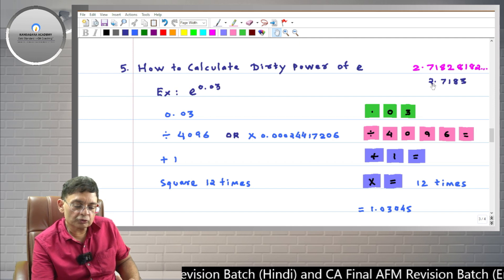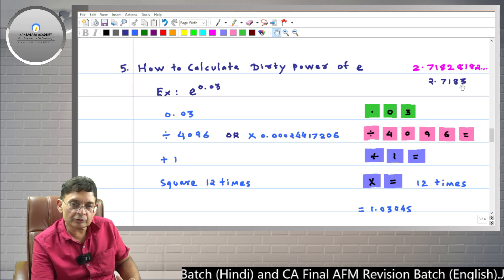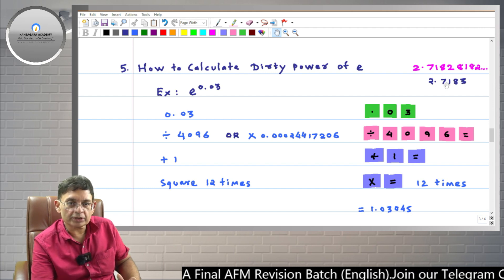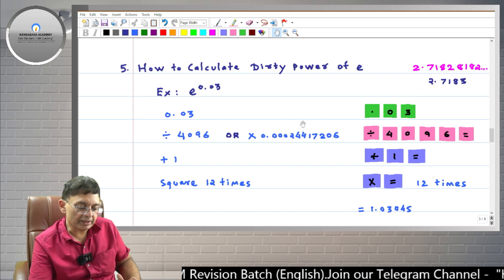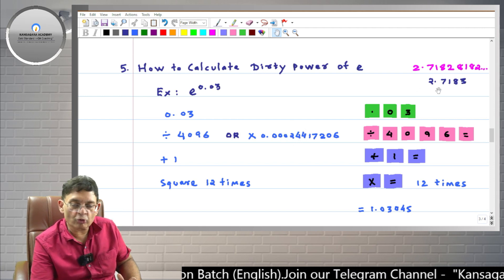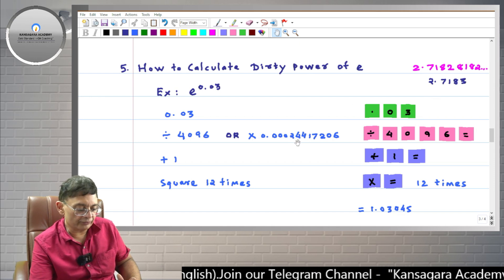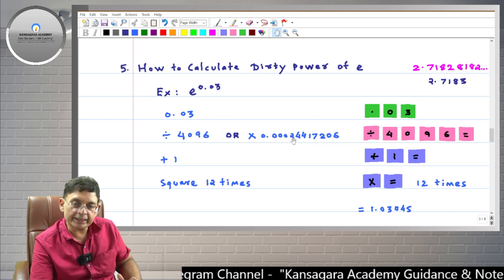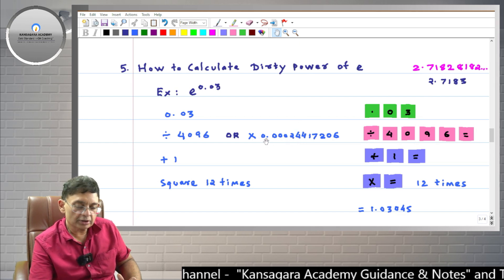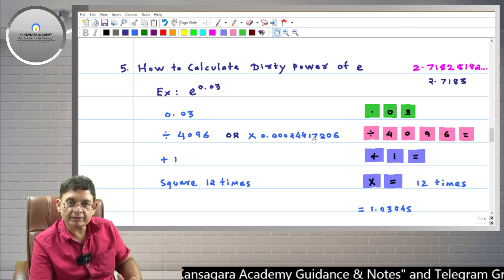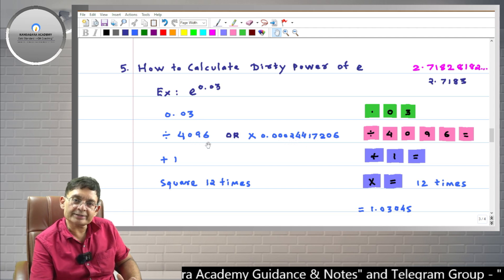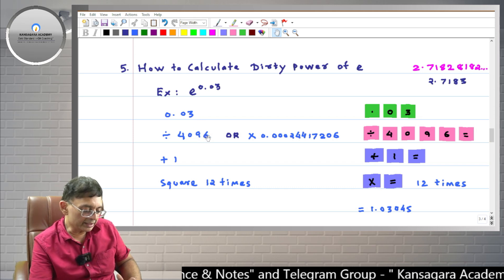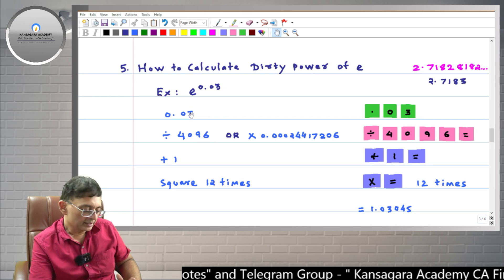You have to enter 2.7183. Then you take 12 times root and then do minus 1. So you will get this number. This number is basically the chord of E. Now it may be difficult for you to remember this number. So if you take the inverse of this—1 upon 0.00024417206—then you get 4096. So 4096 is easier to deal with.